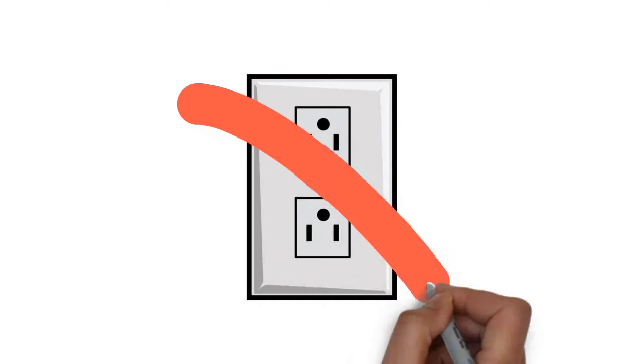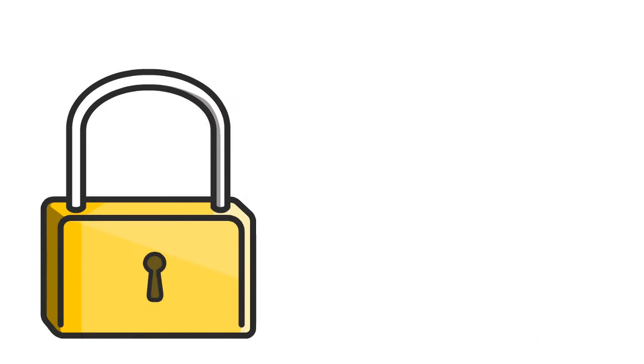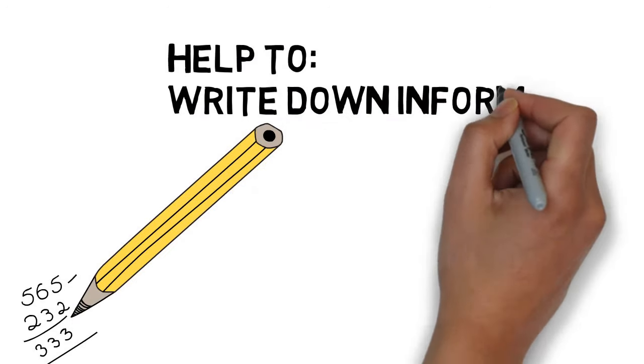But some technologies do not have wires at all. Umbrellas help to keep us dry in the rain, and a lock helps to keep our things safe. A pencil helps us write down information, and a fork helps us to eat food.